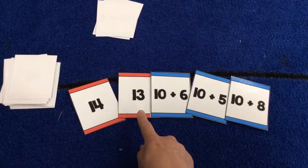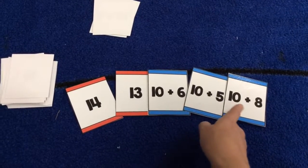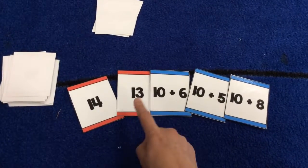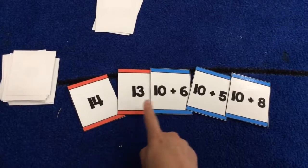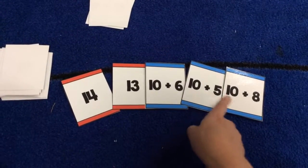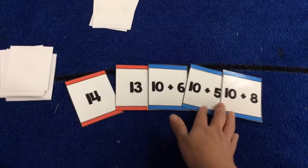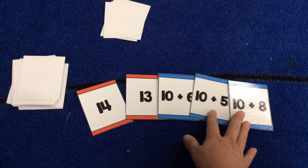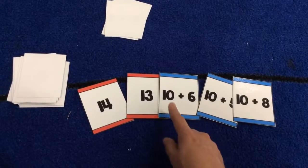I want to see if I have any matches. Fourteen. Oh, none of these cards show fourteen. Thirteen. No. Sixteen. Fifteen. Eighteen. So I don't have a match. So when it's my turn, I'm going to ask my partner for one of these numbers.